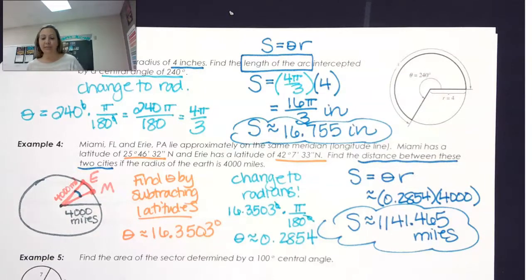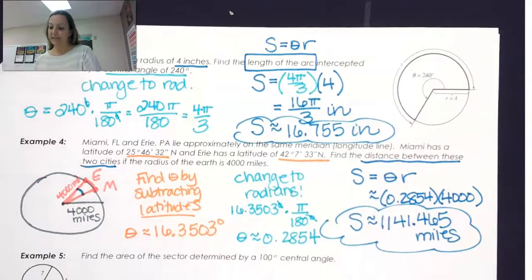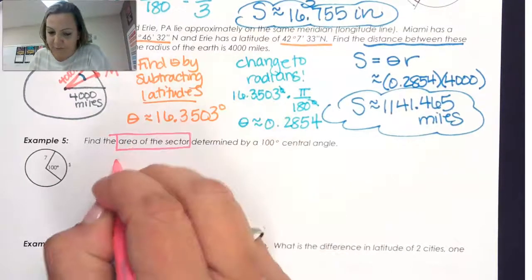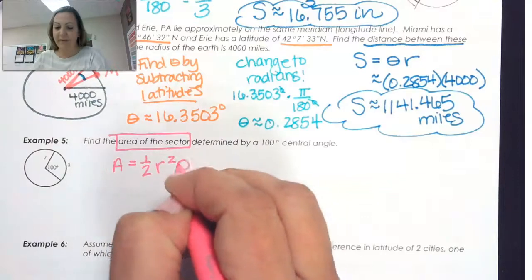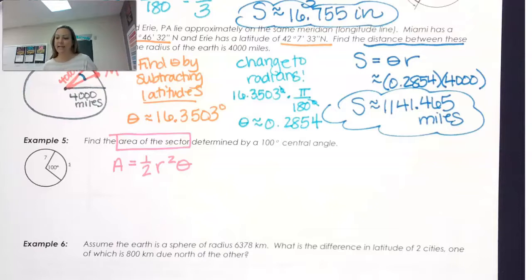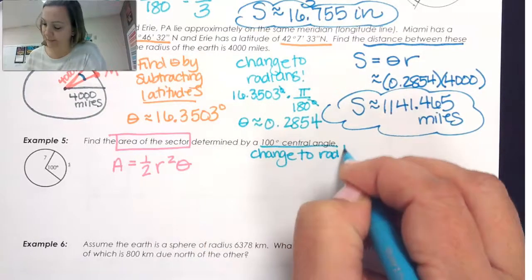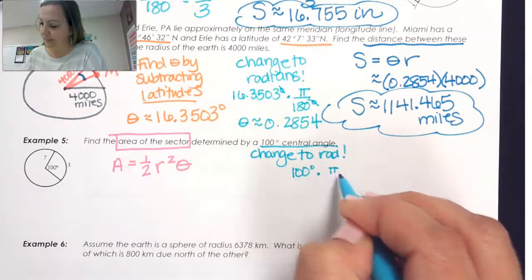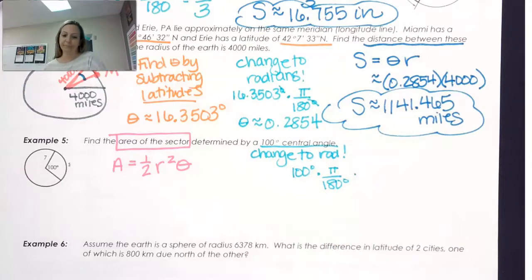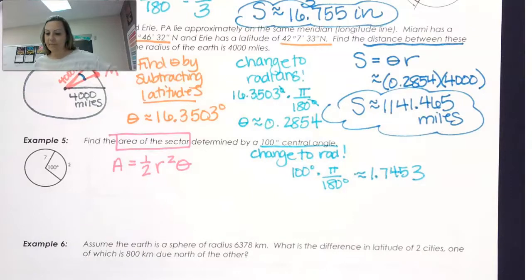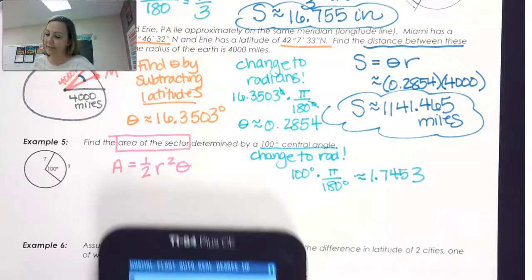The next question asks us to find the area of a sector determined by a 100-degree central angle. For the area of a sector, the formula is A = ½R²θ. But theta must be in radians, so we need to change 100 degrees to radians: multiply by π/180. That gives approximately 1.7453 radians. It's best to keep as much precision in the calculator as possible.